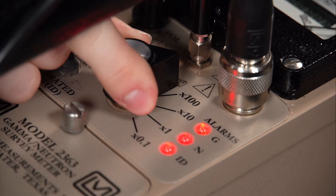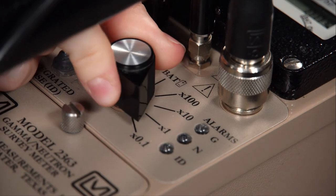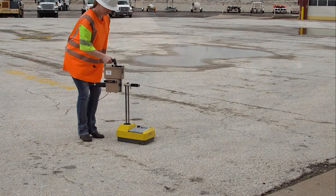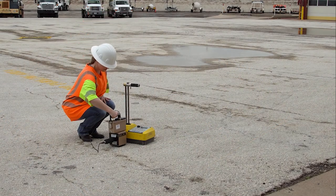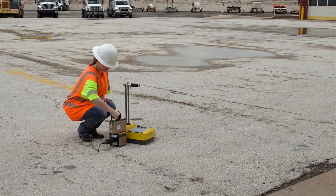Turn the rotary range switch to the 0.1 position for maximum sensitivity or to the range that encompasses your decision level. Point the meter towards the suspected radioactive material and place the front of the detector as near as possible.